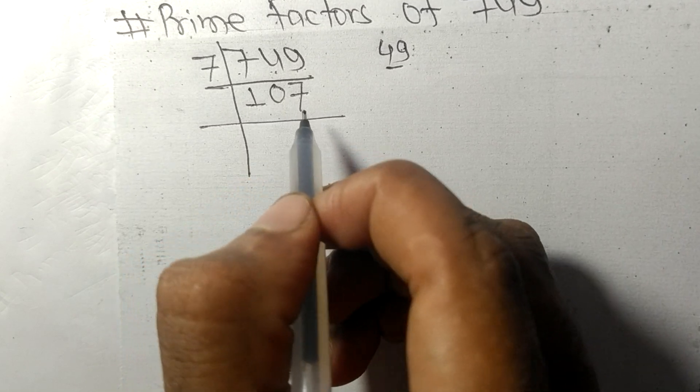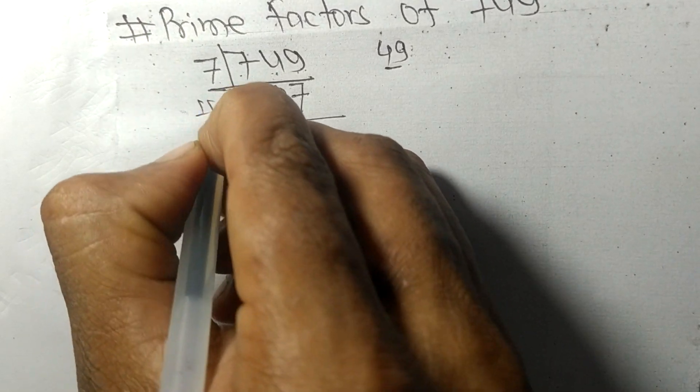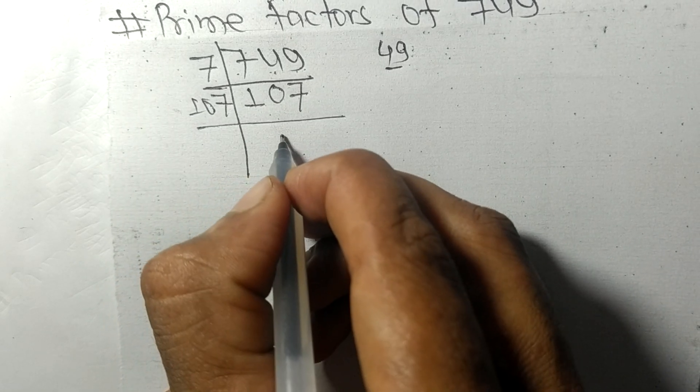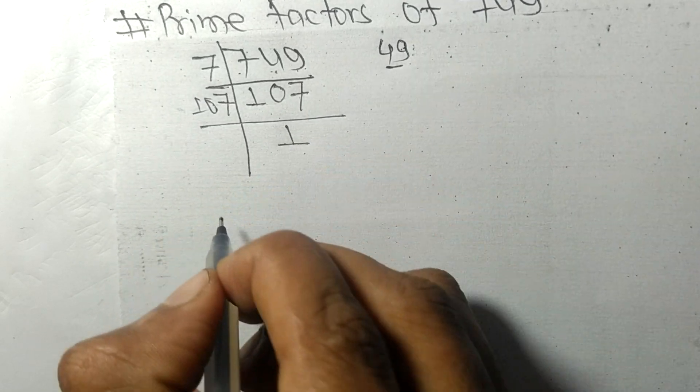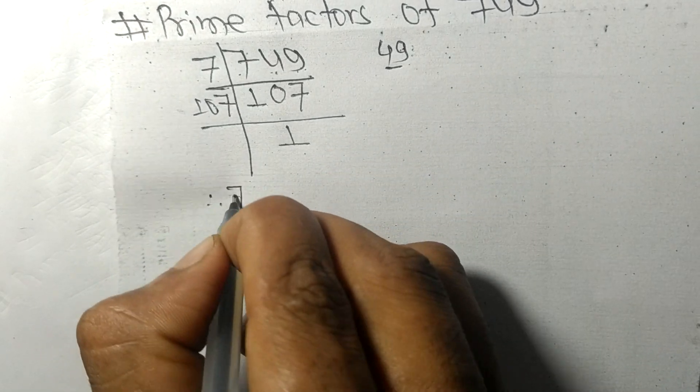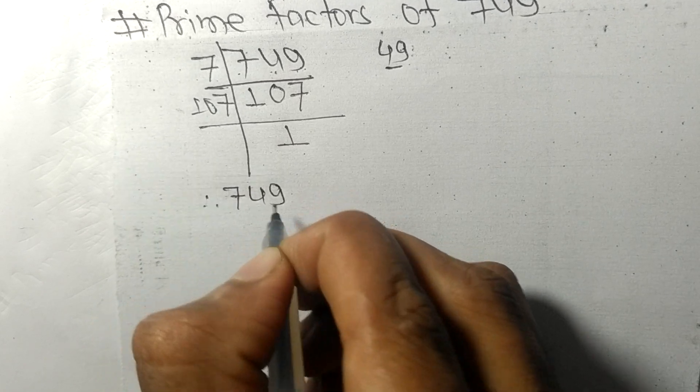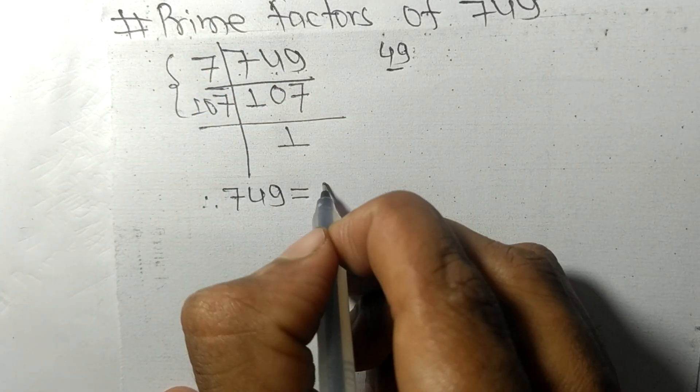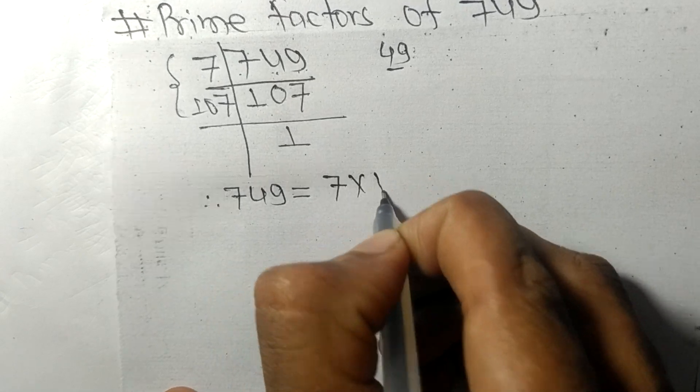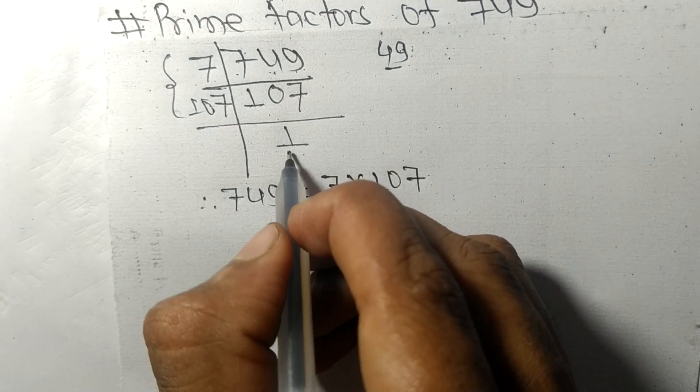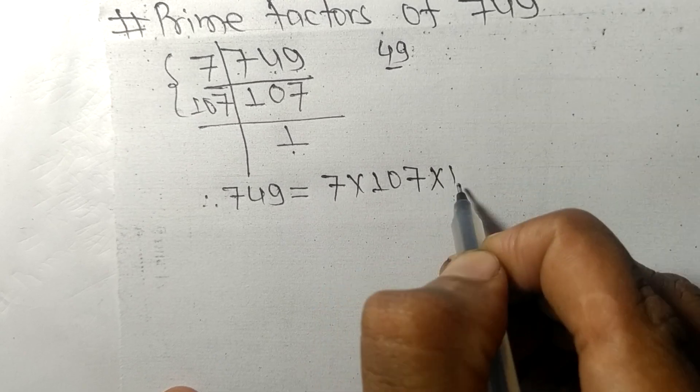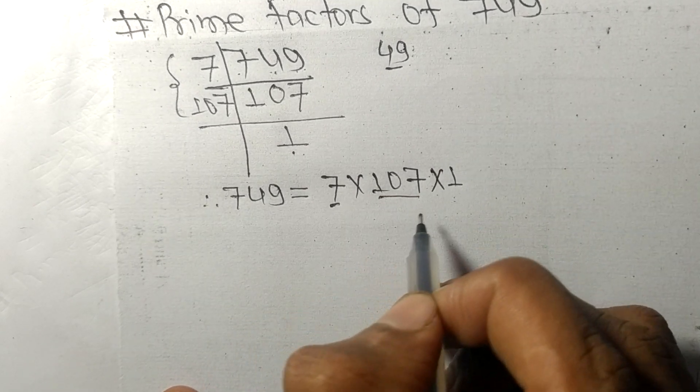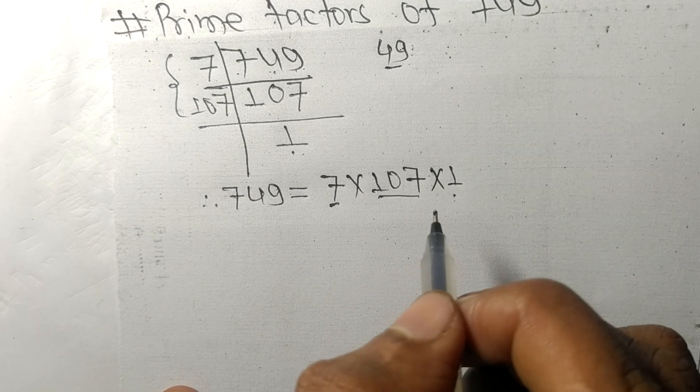So it is exactly divisible by 107 only, and on dividing we get 1. Therefore, 749 equals 7 times 107 times 1. So 7, 107, and 1 are the prime factors of 749.